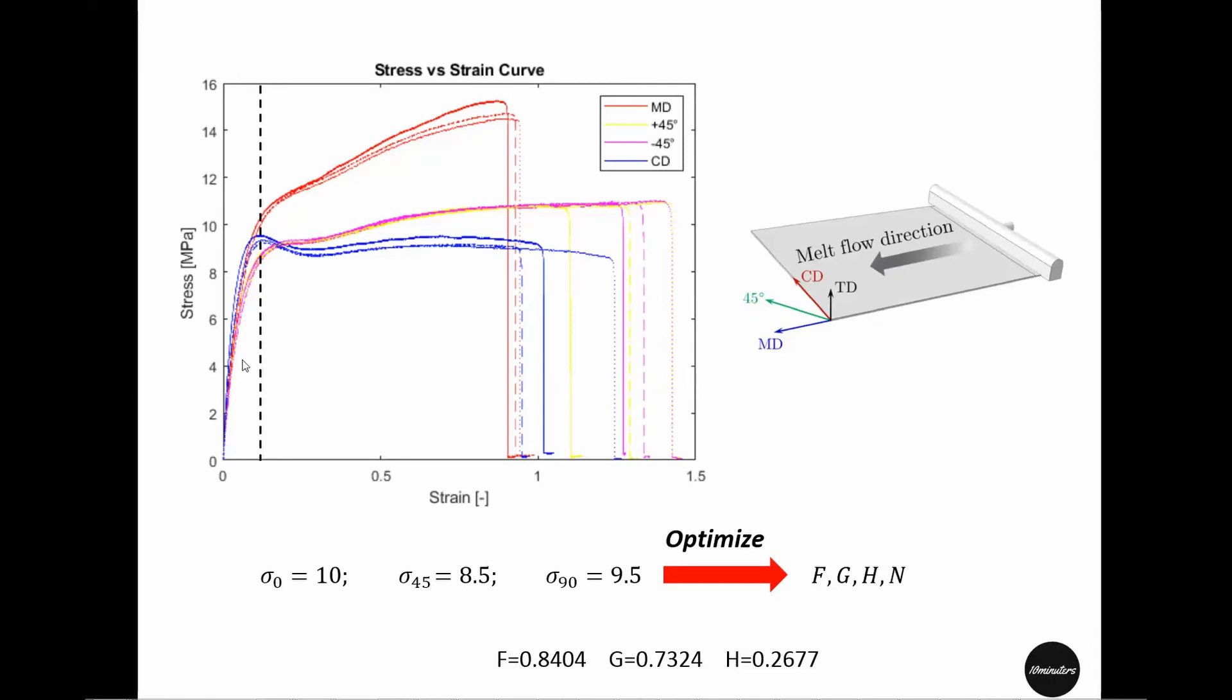We can use the yield stresses from 0, 45 and 90 degree orientation tensile tests to optimize these parameters f, g and h including some additional parameters n. So finally we have the value for these constants.